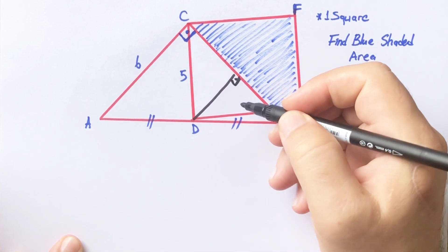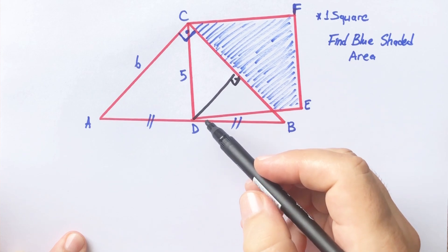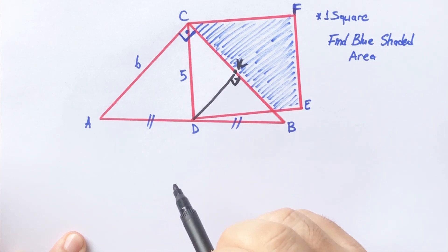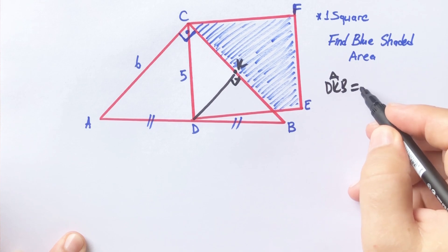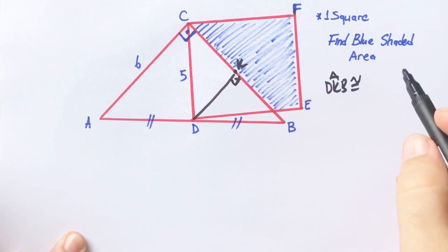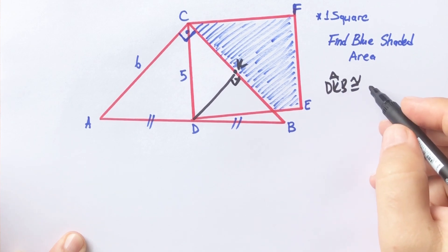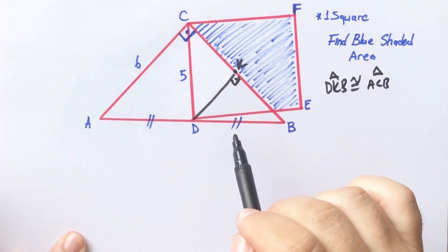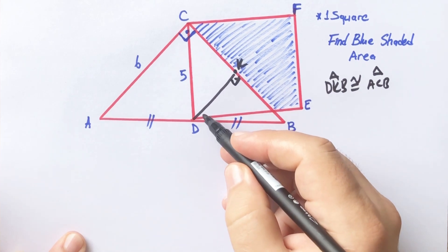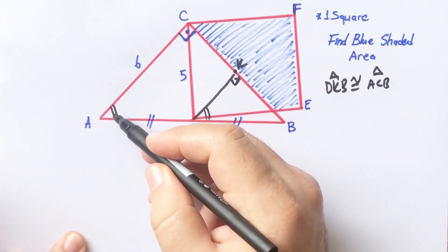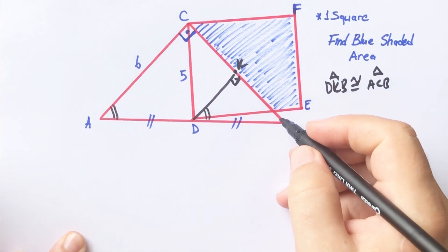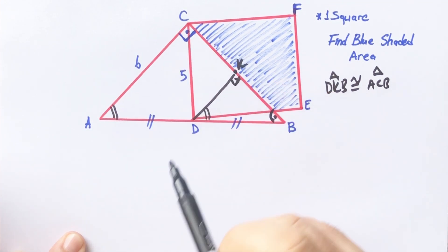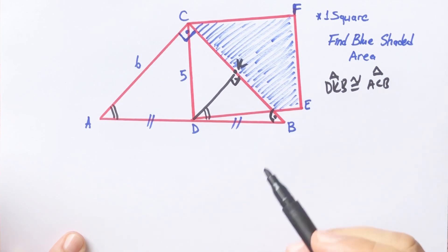Let's call this point K. Triangle KBD must be similar to triangle ACB, because DK and AC are parallel — that means these two angles are equal, and the third angles must be equal. So according to the Angle-Angle-Angle theorem, these two triangles must be similar.